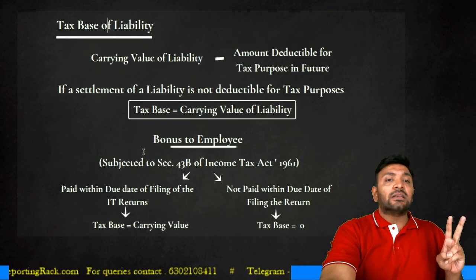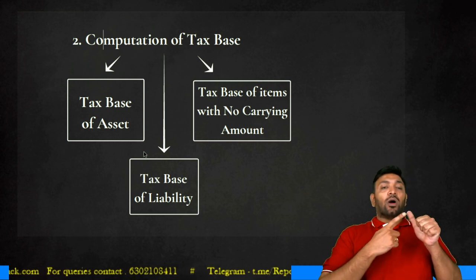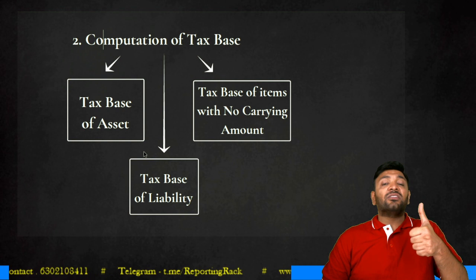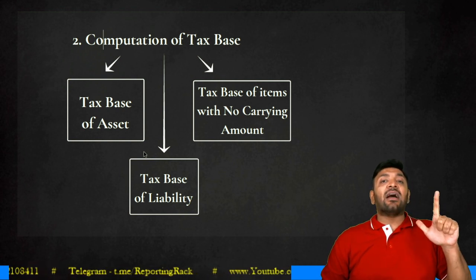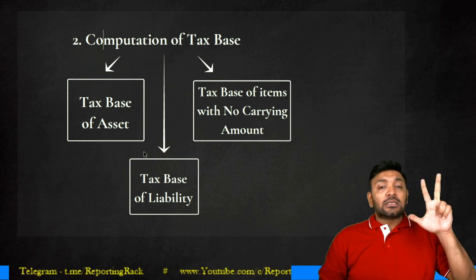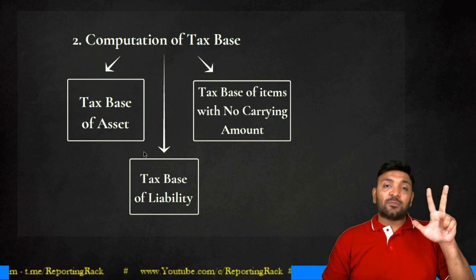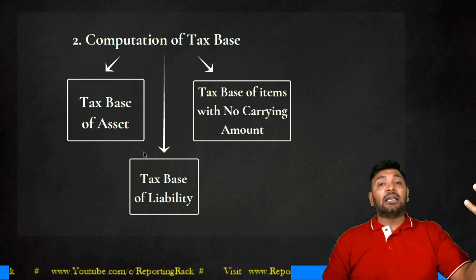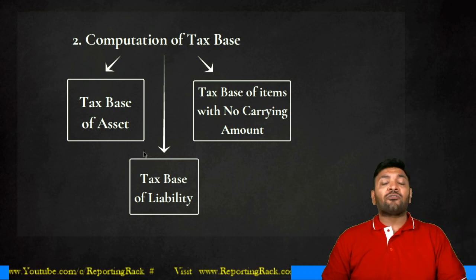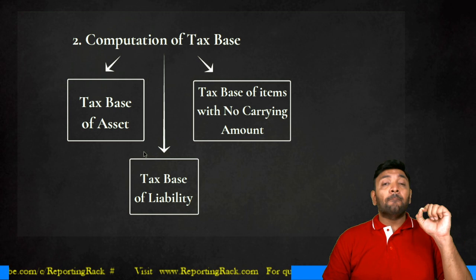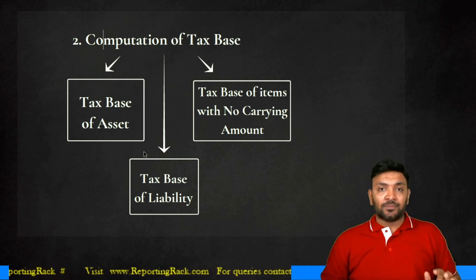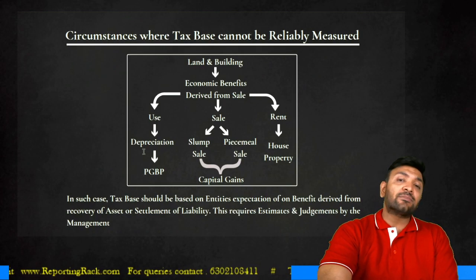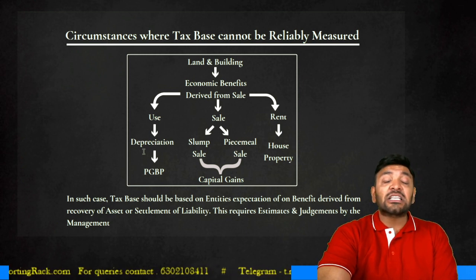Summary of step 2: tax base of an asset is the amount deductible for tax purposes against taxable economic benefits from recovery of the carrying value. Tax base of a liability is carrying value minus amount deductible for tax purposes in future. Sometimes there is no carrying value but we still must determine tax base. Sometimes the tax base cannot be determined because the asset can derive income in multiple ways — in such cases, use the entity's expected use. These four aspects conclude discussion on step 2.